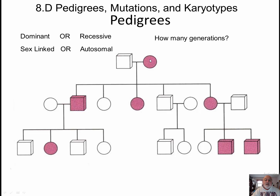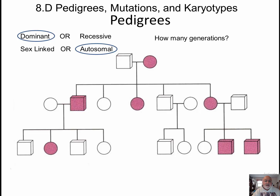Here we have one where it looks like we have an affected woman who had an affected daughter, an affected son, a normal daughter, a normal son, and another affected daughter who affected her sons. And this son affected their daughter. So again, we have three generations. It looks like we don't really have any carriers, so this one must be a dominant one. It's autosomal because it seems to be affecting anybody. And again, we have grandparents, parents, and kids — three generations.